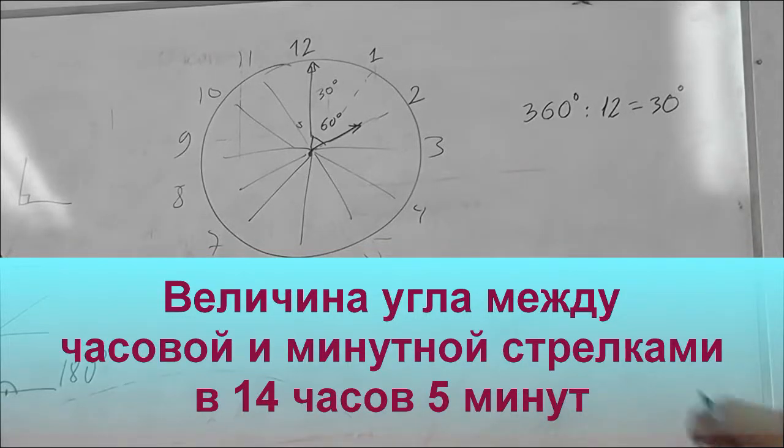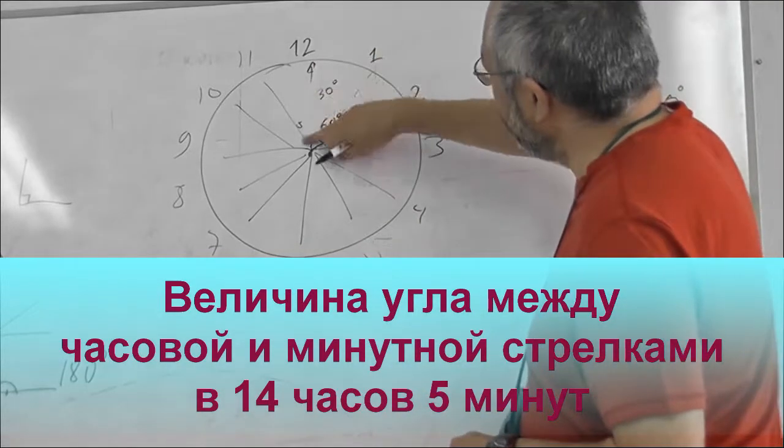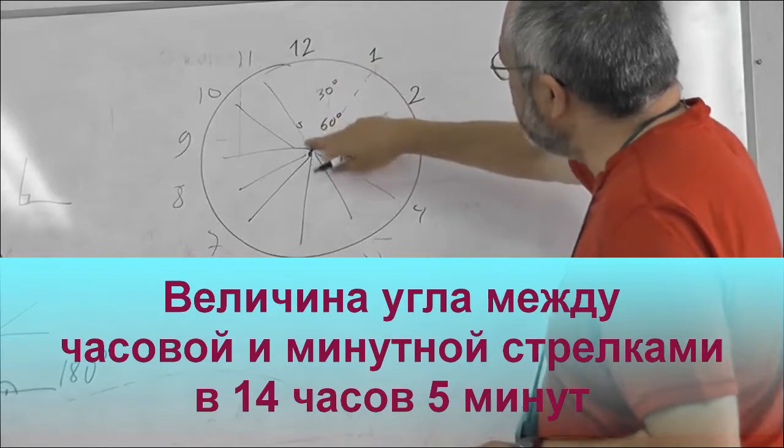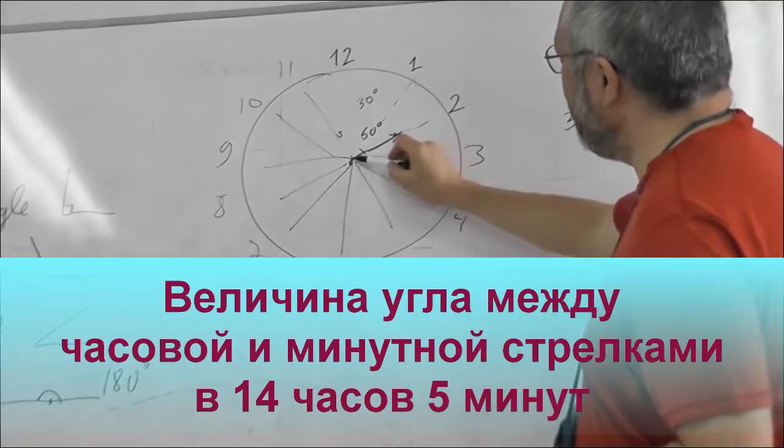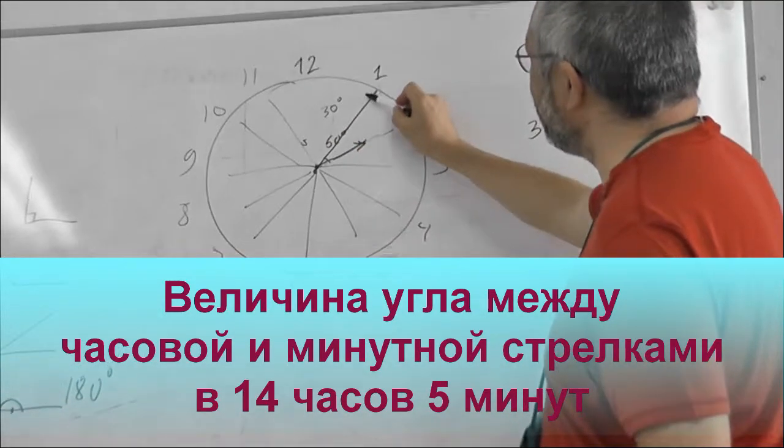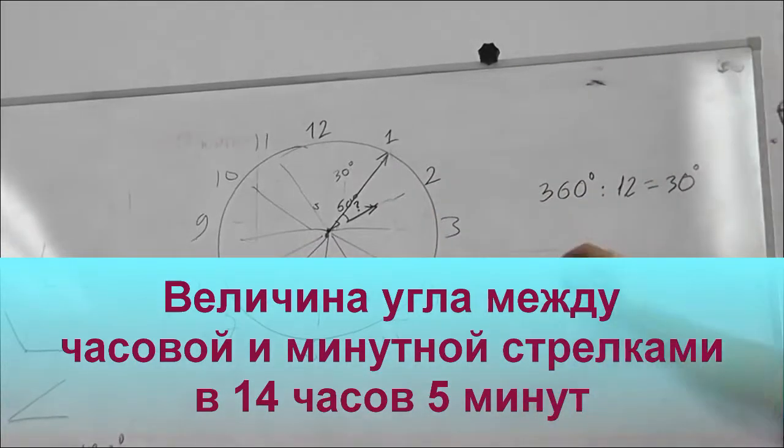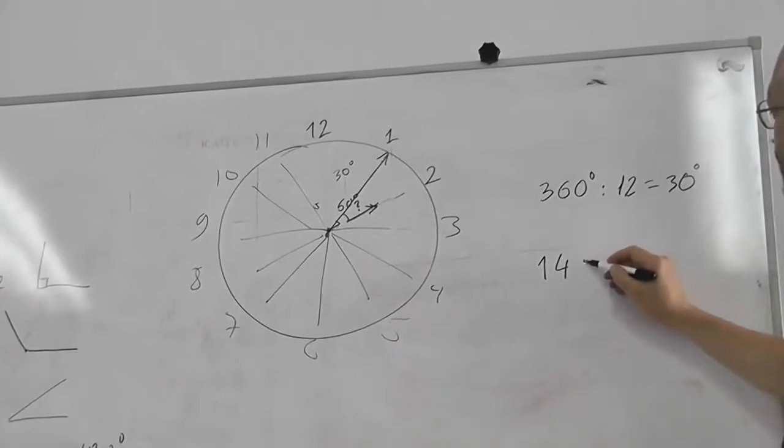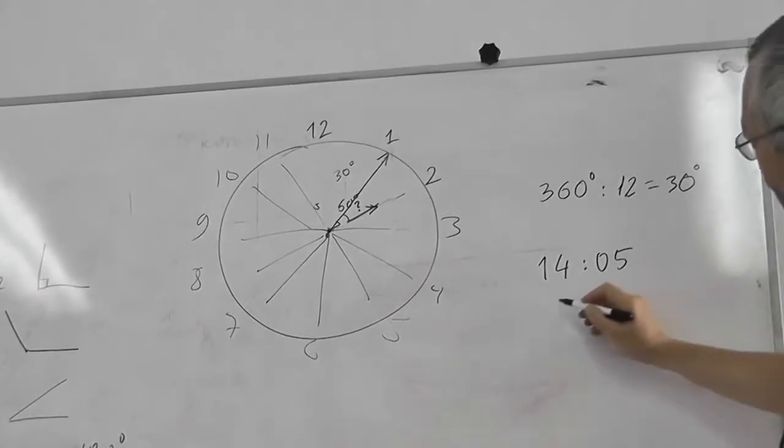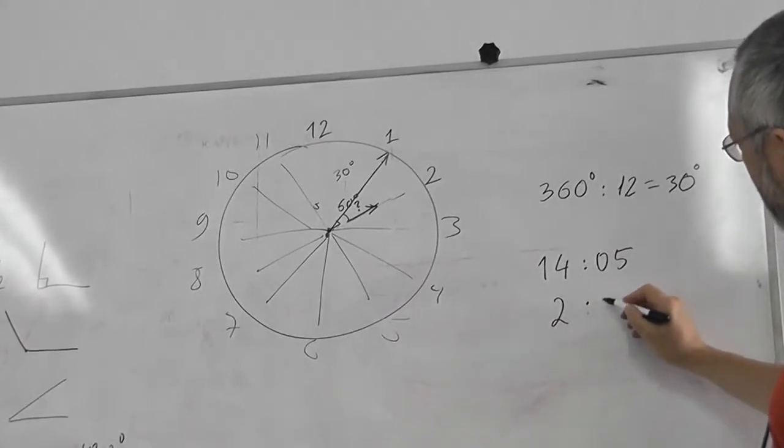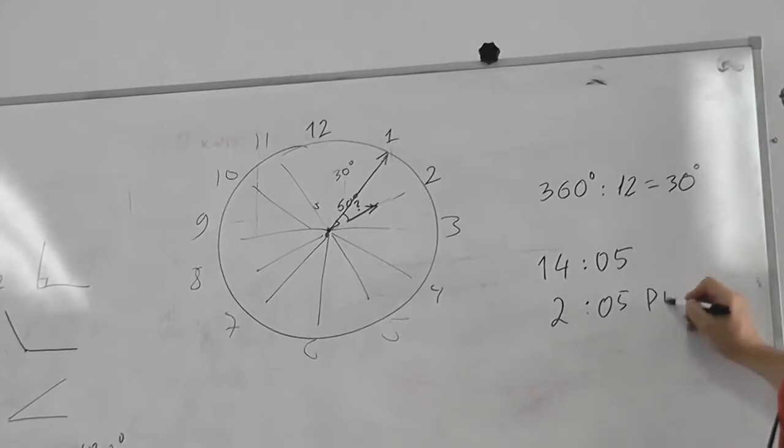Now, more tricky question. Imagine there is 2 p.m., 5 minutes after 2 p.m. So in our Russian notation, it's 14:05. For English, it's 2:05 p.m.